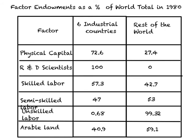In the 1980s, Mutti and Morici looked at several factors of production in 1980: physical capital, research and development scientists, skilled workers, semi-skilled workers, unskilled workers, and arable or cultivable land. They compared six industrial countries to the rest of the world. The factor abundance for industrial or rich countries lies in physical capital, research and development scientists, and skilled workers, but not in unskilled workers or cultivable land.